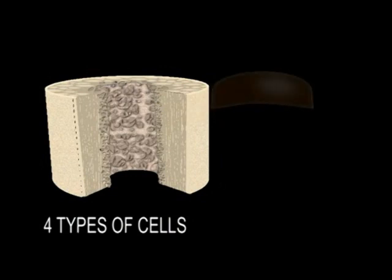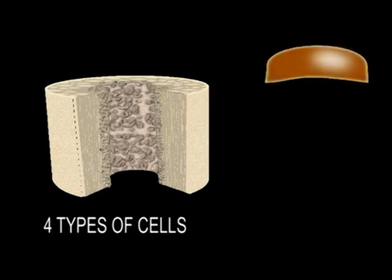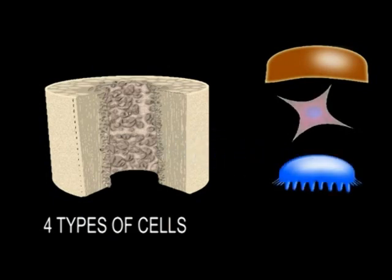Bones are composed of four types of cells, namely osteoblasts, osteocytes, osteoclasts, and lining cells.